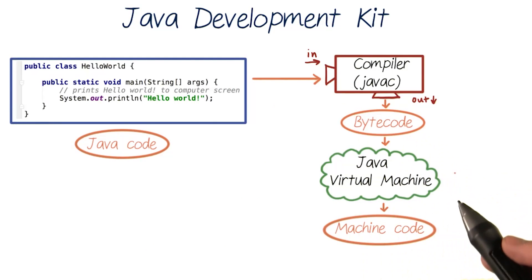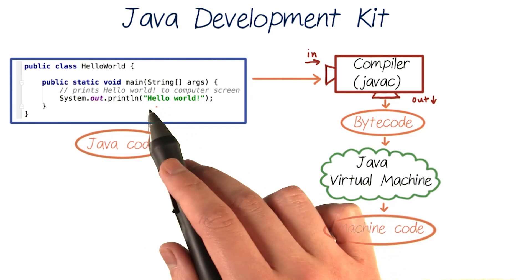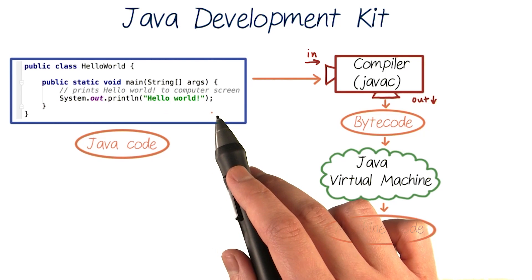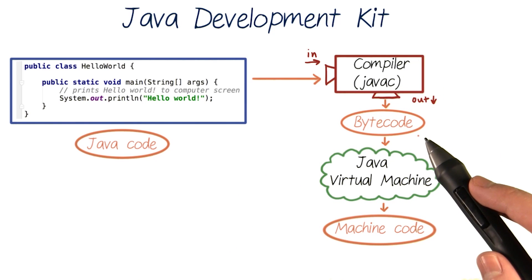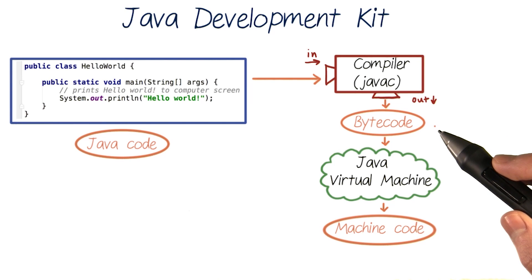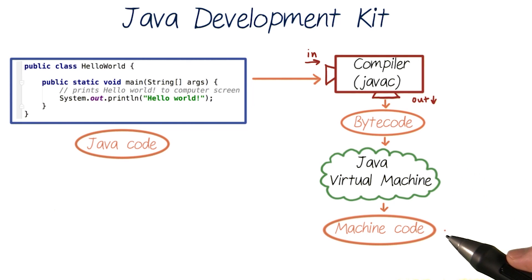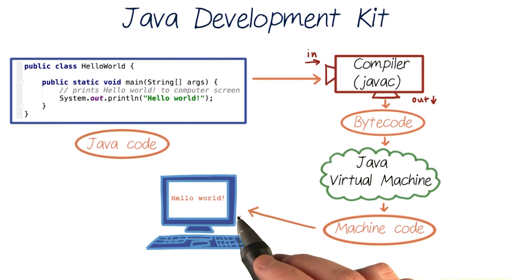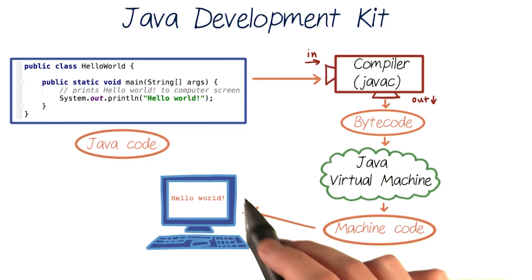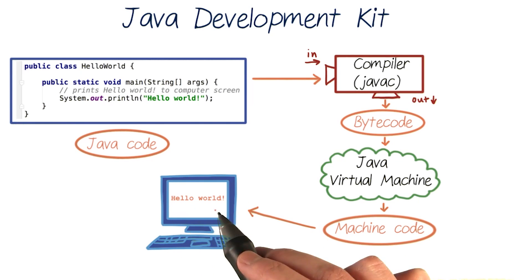And here's the whole translation pipeline. Any Java code you write, like this hello world println statement, will get compiled into bytecode by our Java compiler, JavaC. And then this bytecode gets passed to the Java Virtual Machine, which does the final translation step and translates this into machine code. And this is the code that your computer understands. So then you see the execution of your code on your computer screen — this print output.